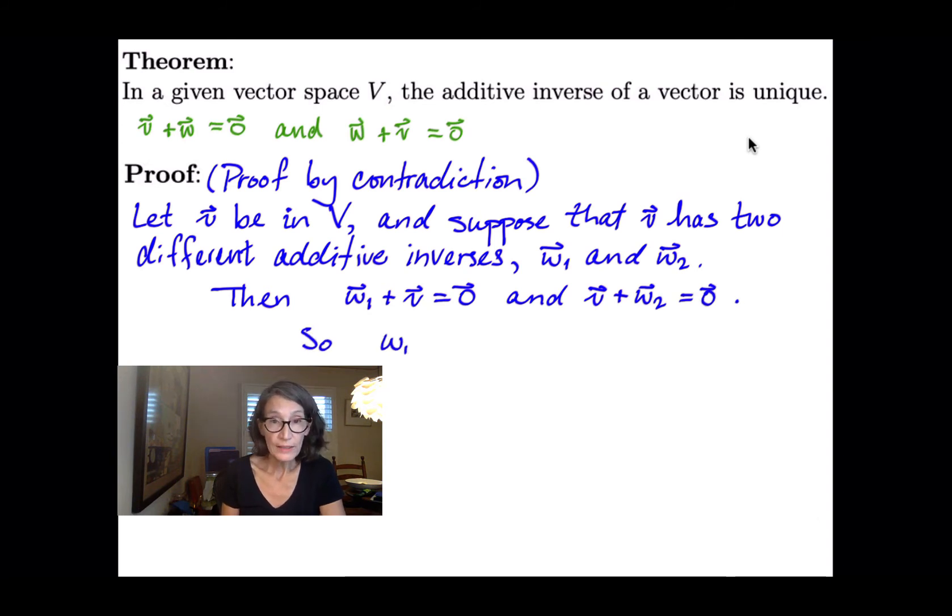So now let's write down w1 as w1 plus the additive identity. That's one of our axioms. That's axiom 4. But we can rewrite that additive identity as v plus w2, because that's one of our assumptions.